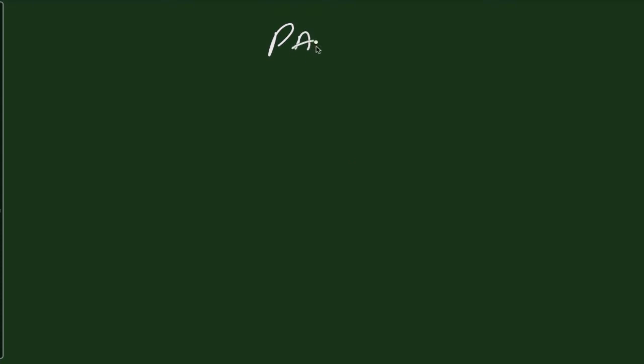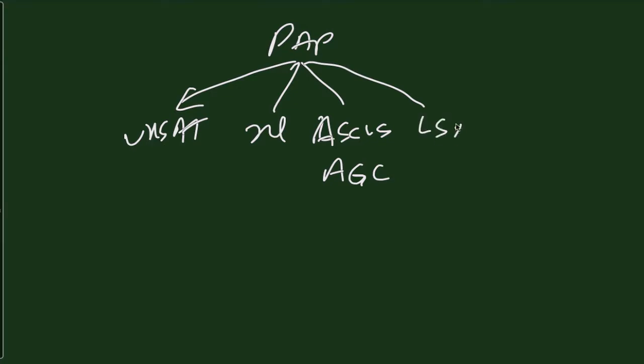Let's talk about pap smears and the development of pre-cancer and cancer. When a woman gets a pap smear, the result can be unsatisfactory. The result can be normal. The result can be ASCUS or AGC. The result can be low grade squamous intraepithelial lesion. The result can be high grade squamous intraepithelial lesion.